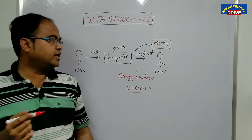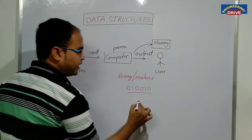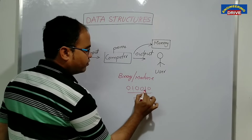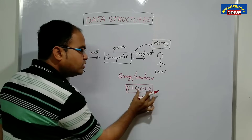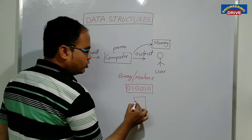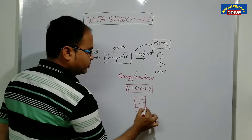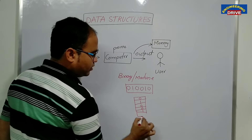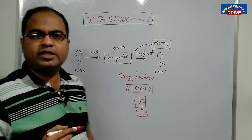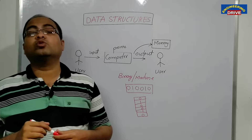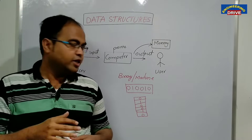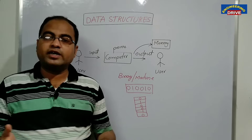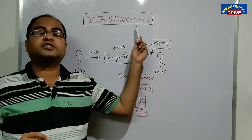Data storage doesn't mean there is only one fixed method. For example, we have six bits — 0, 1, 0, 0, 1, 0. Does the computer follow only one method to store these? No. The computer uses different types of methods to store data in memory. We call those different types of methods as data structures.